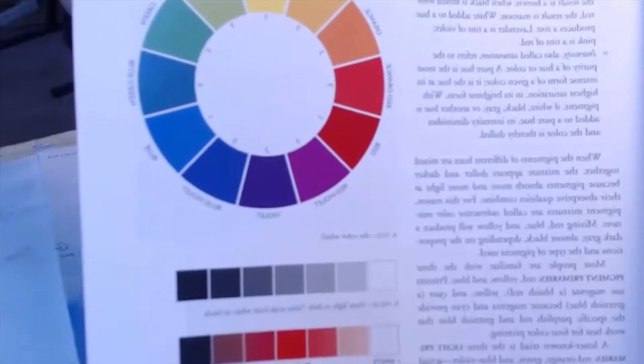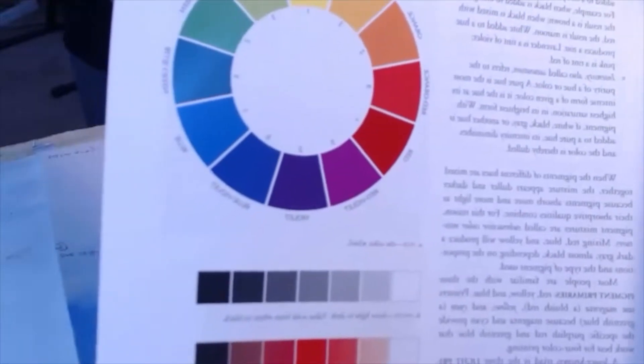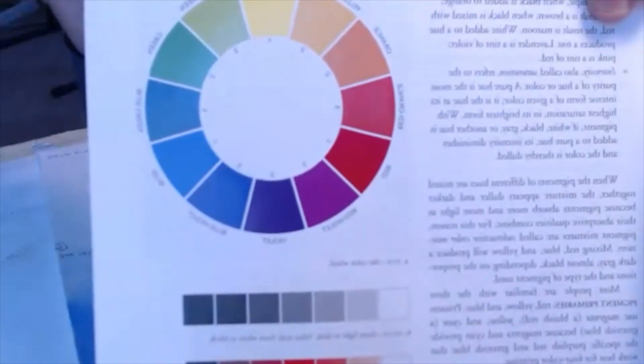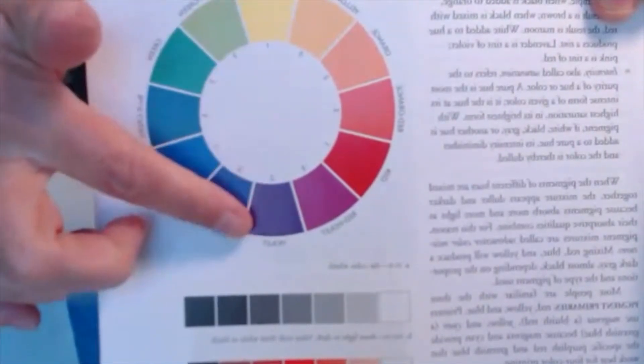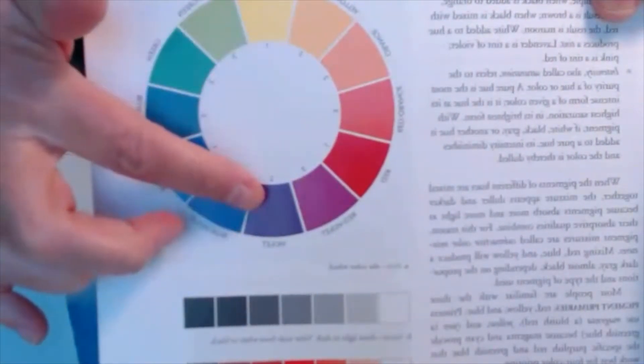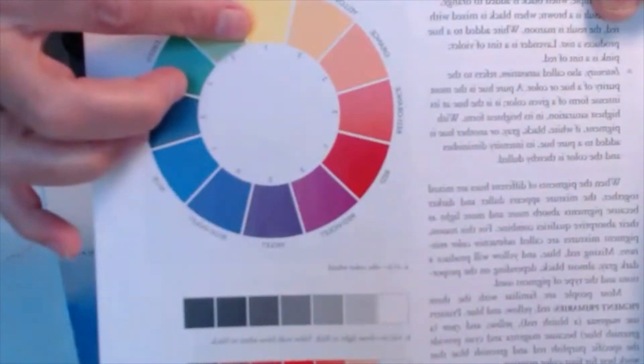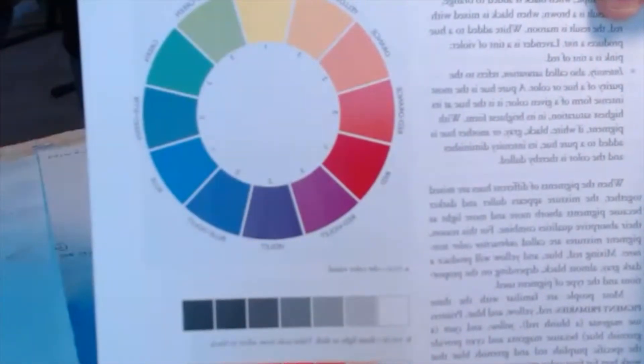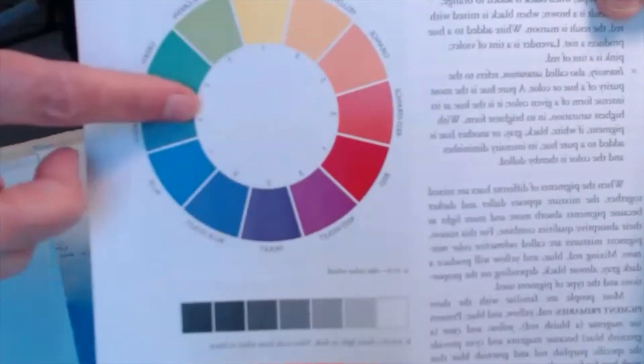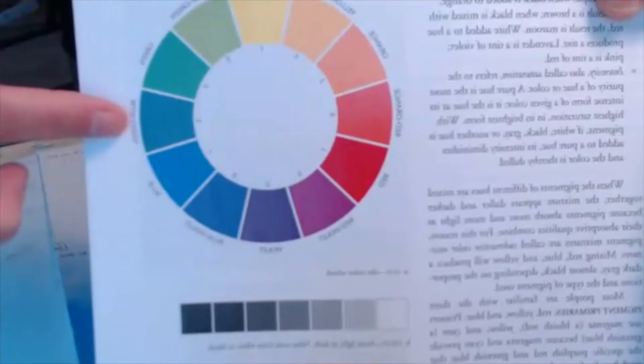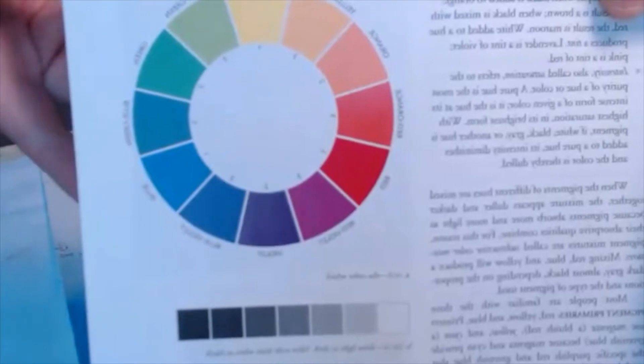One thing you want to familiarize yourself with is the color wheel with twelve colors. Colors that are opposite each other on the color wheel make a neutral color. Yellow, which is opposite of violet, when you mix those together it basically cancels out those colors depending on how much of each hue you use and the concentration.